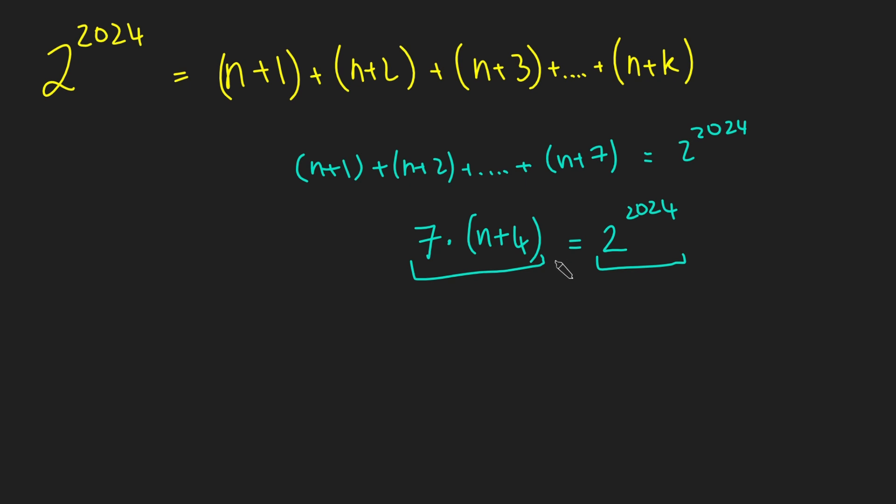So that means, if I am to be able to write 2 to the 2024 as the sum of a bunch of consecutive integers, I must be using an even number of consecutive integers. So I can put this k as a 2k here.